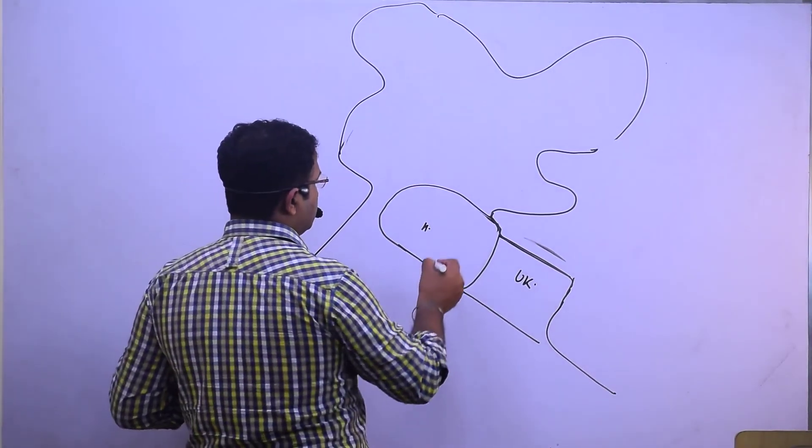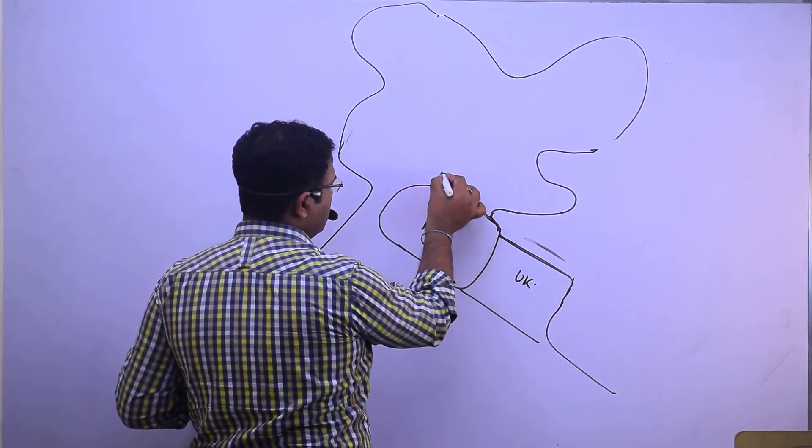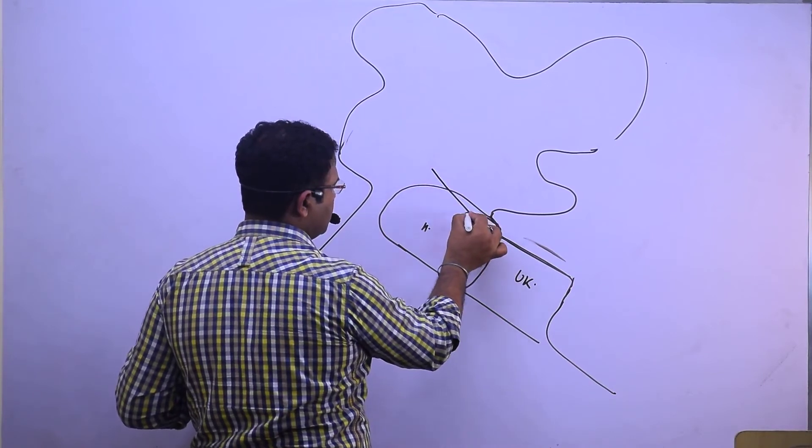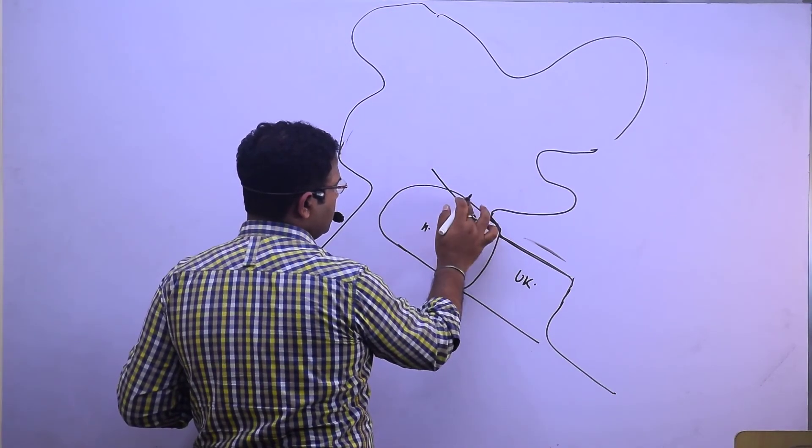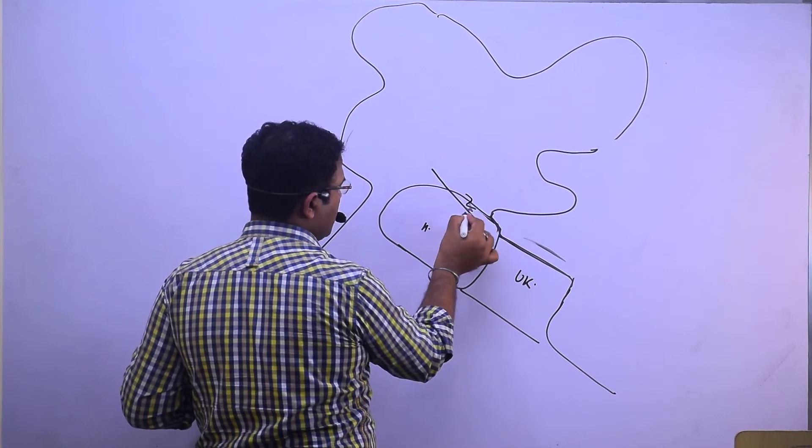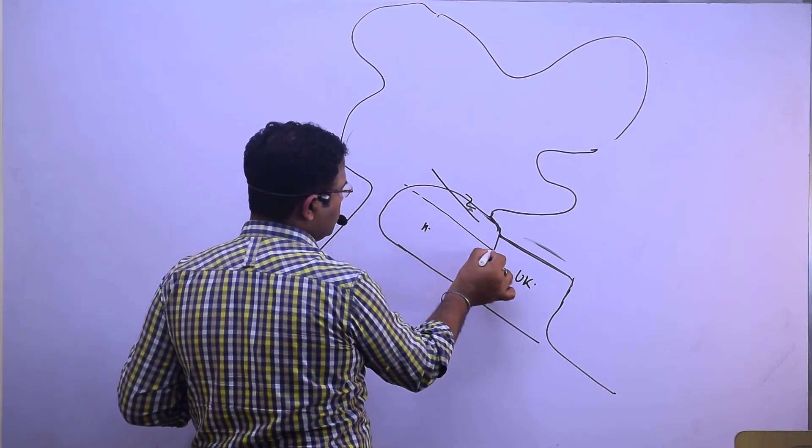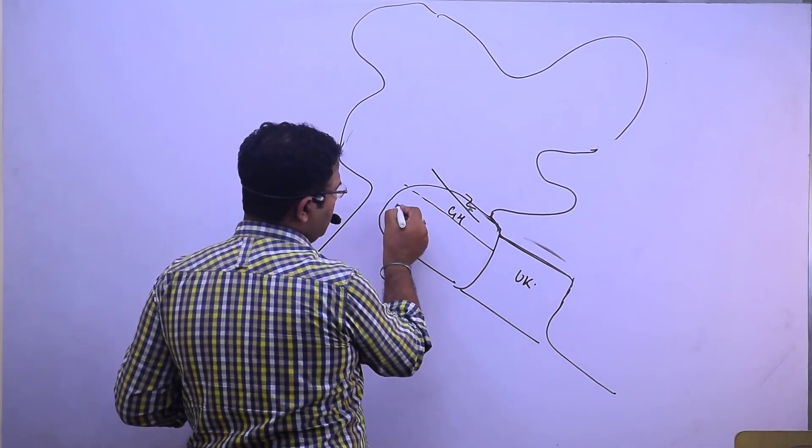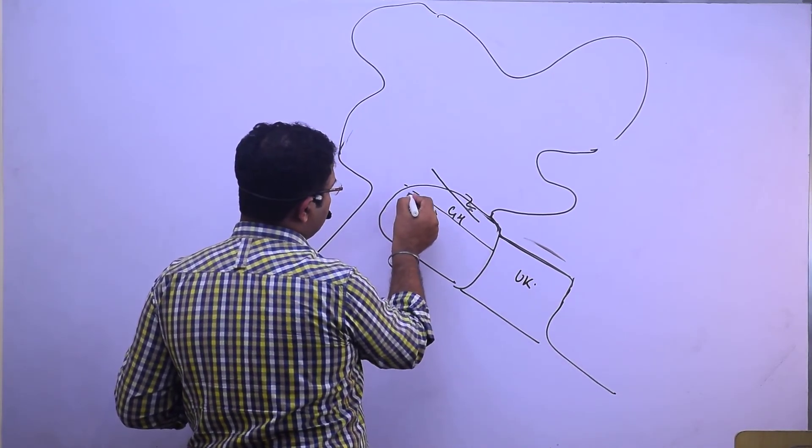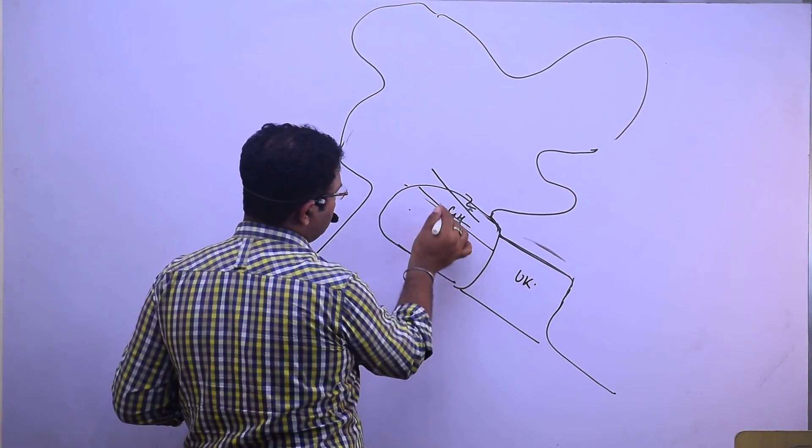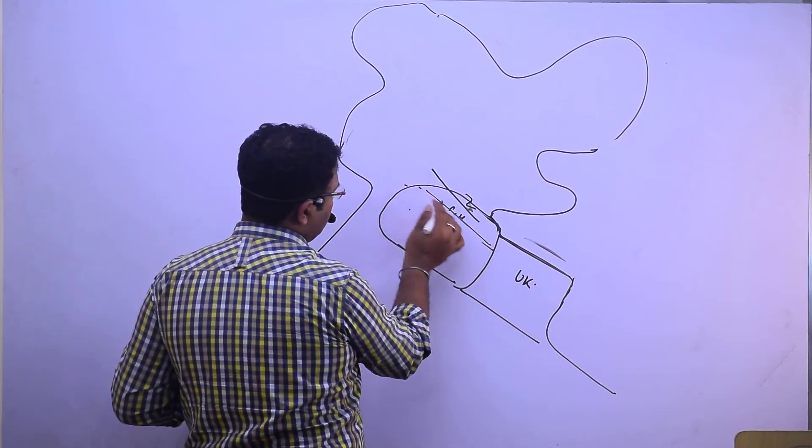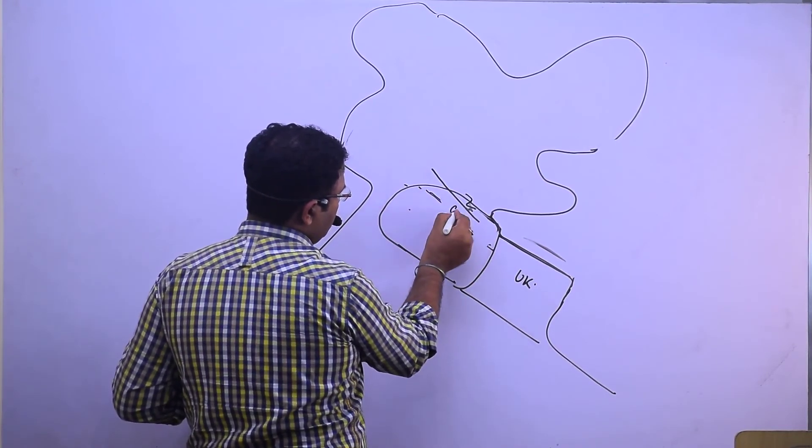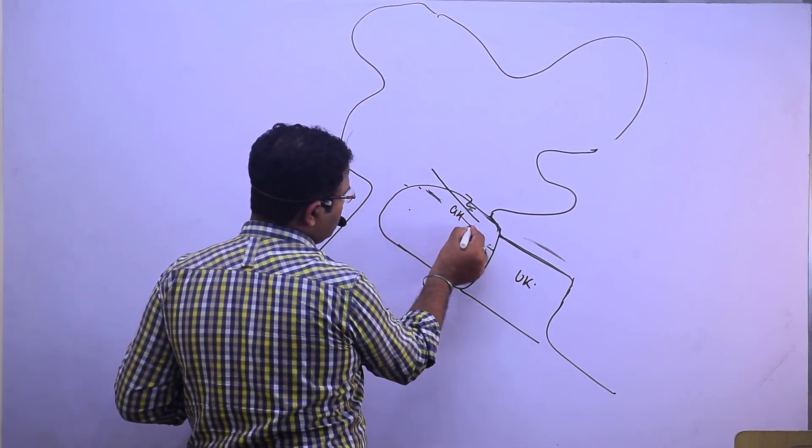Now I said that Zaskar range, some portions are coming in this region. Which range is this? I said that this is Zaskar. And this one is Great Himalaya, and then Middle Himalayas. Great Himalaya goes like this, coming from here.